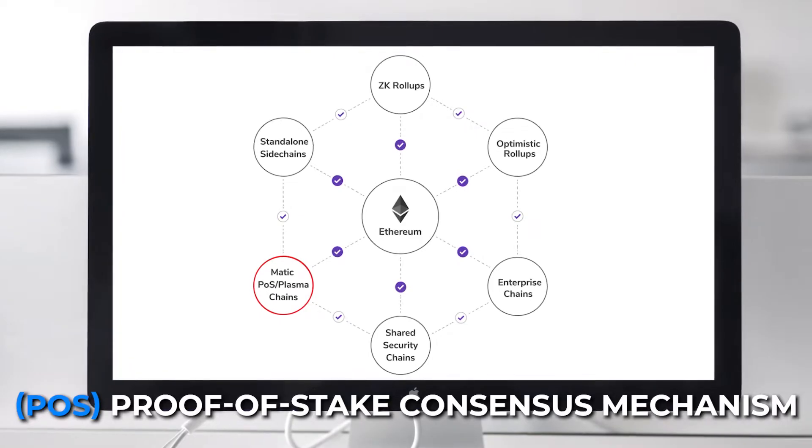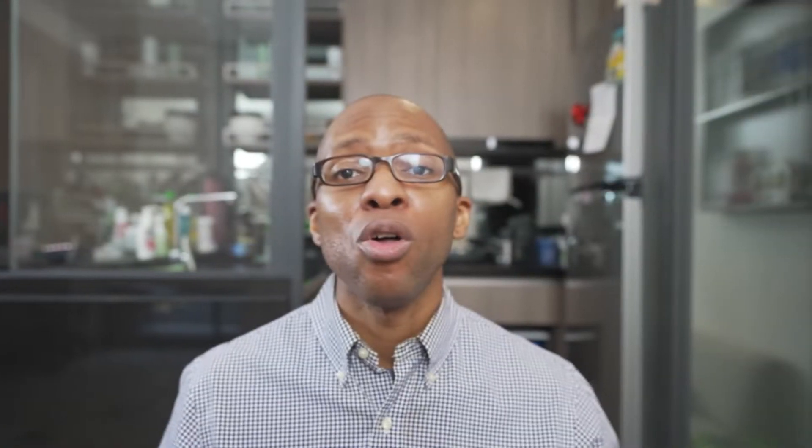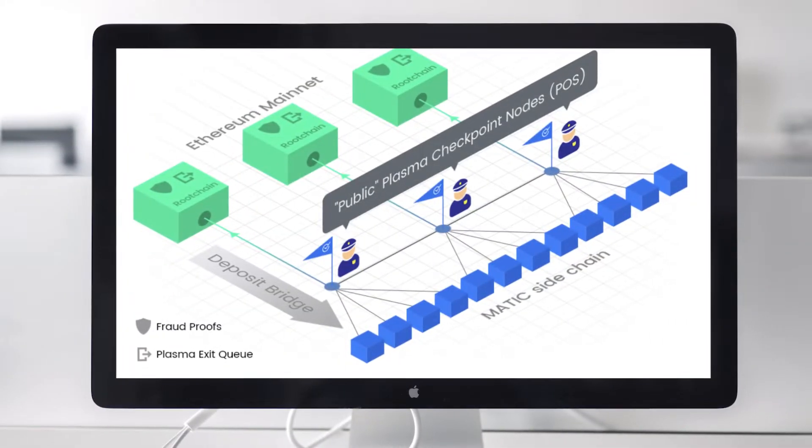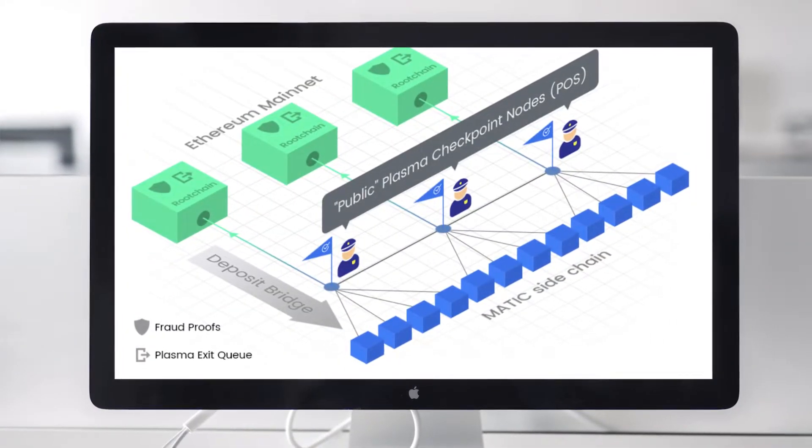Let's look at how Polygon achieves its scaling goals through the underlying technical architecture of its proof-of-stake consensus mechanism called commit chain. The commit chain proof-of-stake architecture is the core of Polygon's consensus mechanism. When I'm talking about the commit chain, I'm referring to everything happening under the hood of the blue square that you can see on the screen.